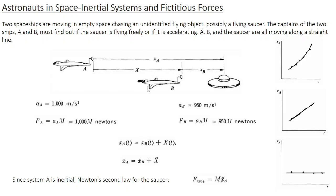The captain of spaceship B also does the same procedure. He identifies the position vector of the object with respect to the spaceship as X_B, and he measures the position, velocity, and acceleration. He gets a value of 950 meters per second squared, and concludes that the force acting on the object is 950 M Newtons.